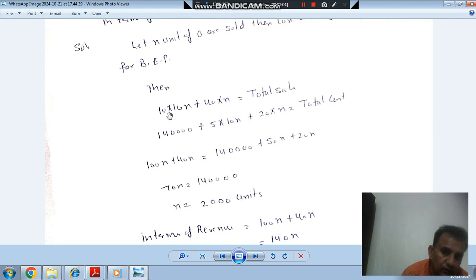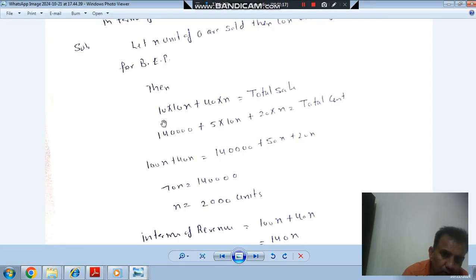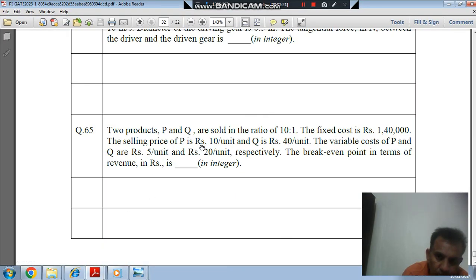So total sale, as the sale price of P is Rs. 10 per unit and Q is Rs. 40 per unit, total sale will be 10 times 10X plus 40X. And total cost will be fixed cost...